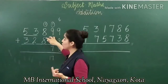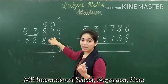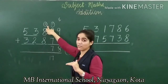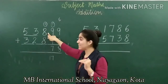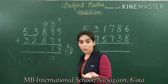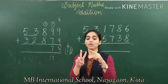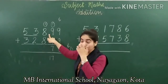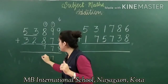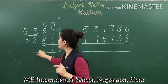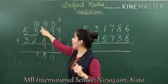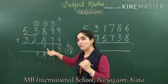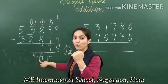Next, at the hundreds place we now have three addends because the carry also counts as an addend. One plus eight equals nine, and nine plus eight: counting on from nine — ten, eleven, twelve, thirteen, fourteen, fifteen, sixteen, seventeen. We get seventeen. Seven goes below and one is carried forward. Then one plus eight equals nine, nine plus eight equals seventeen; again seven goes below and one carry is forwarded.